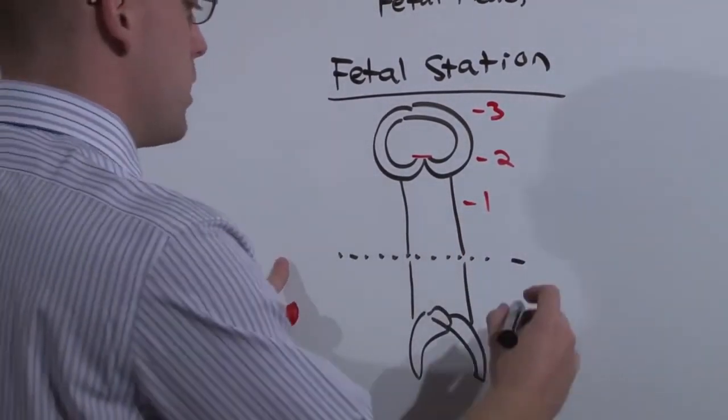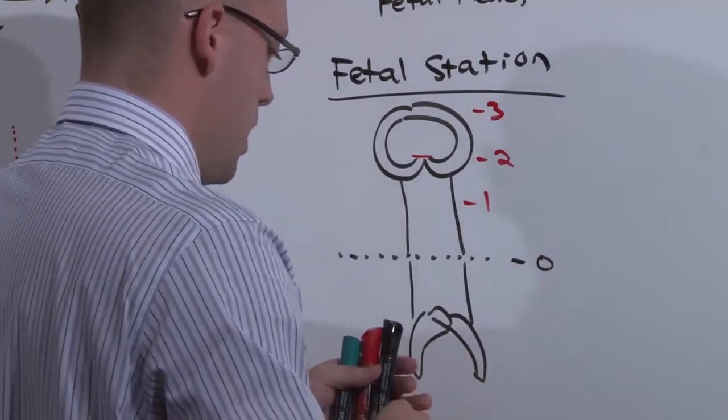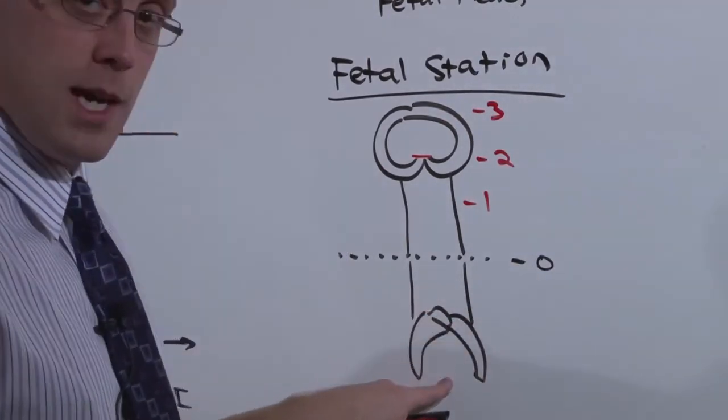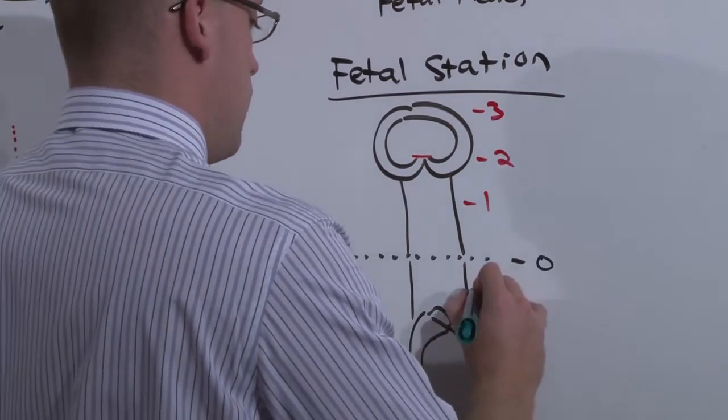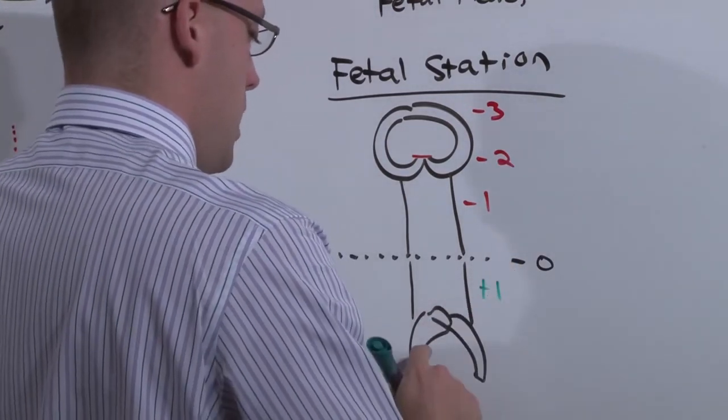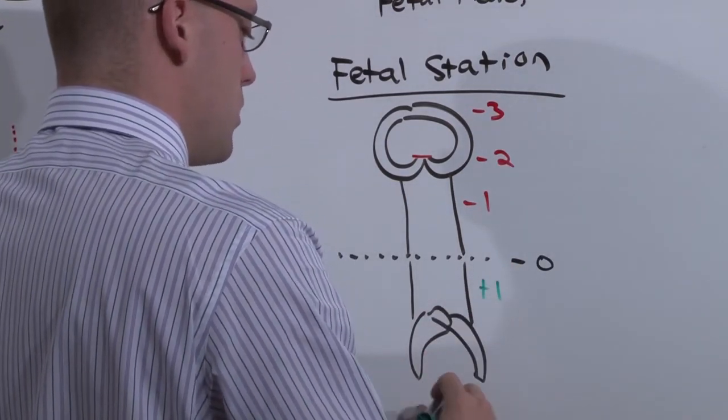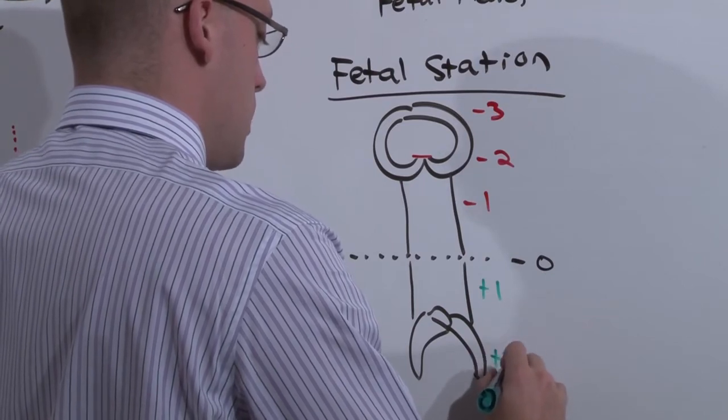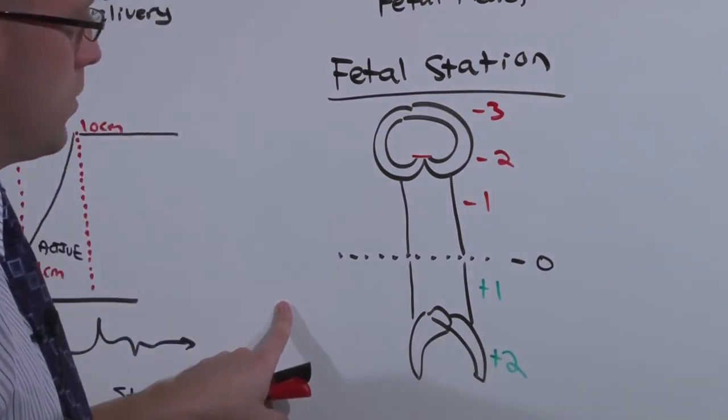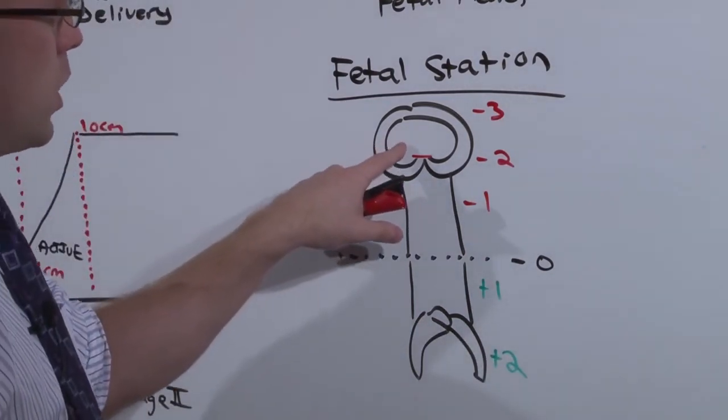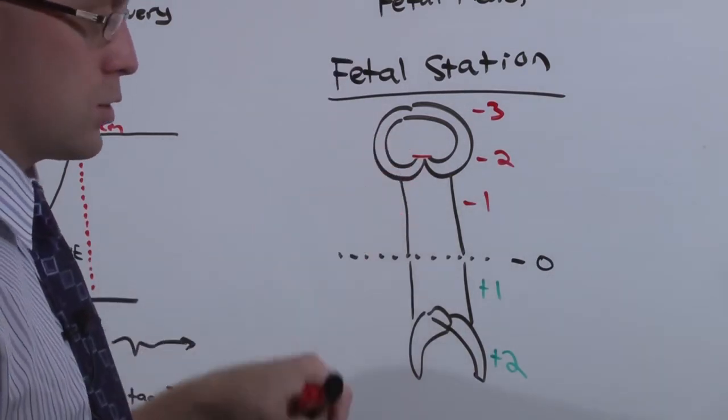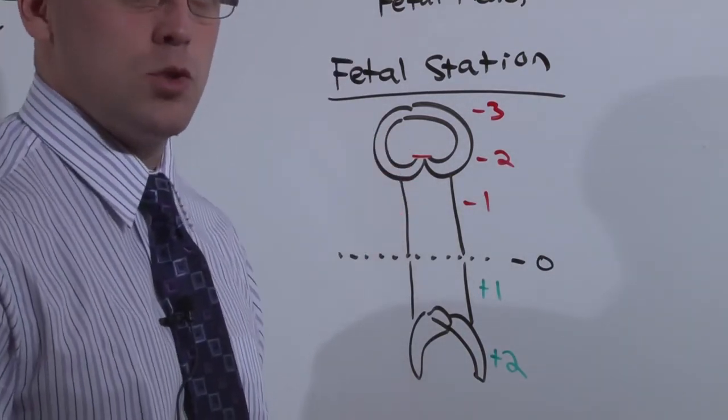And about the midpoint is station 0. As the fetal head gets closer to the exit but is not quite there, the fetal station is plus 1. And as it approaches the entrance to the vagina, the fetal station is positive 2. Engagement is the point at which the fetal head contacts the cervix and tells it to begin to ripen.